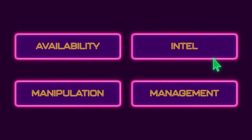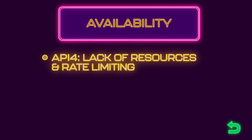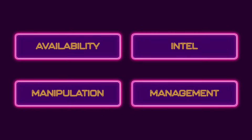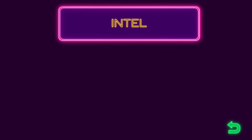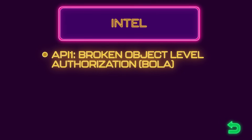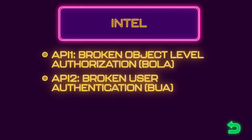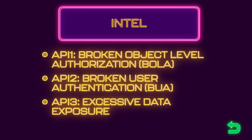The API Security Top 10 takes common API security weaknesses, risks, and threats and groups them into 10 distinct categories. Combined with the AIM categorization, in the Availability category we have API number four: Lack of Resources and Rate Limiting. In the Intel category, we have API number one: Broken Object Level Authorization (BOLA); API number two: Broken User Authentication (BUA); and API number three: Excessive Data Exposure.